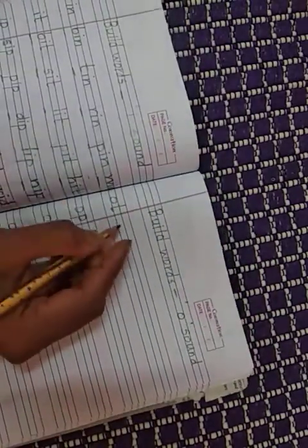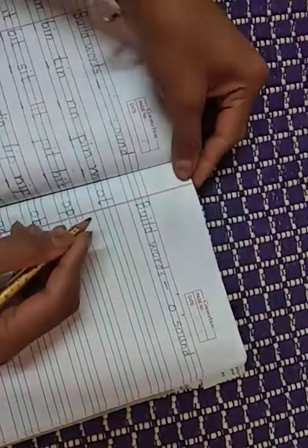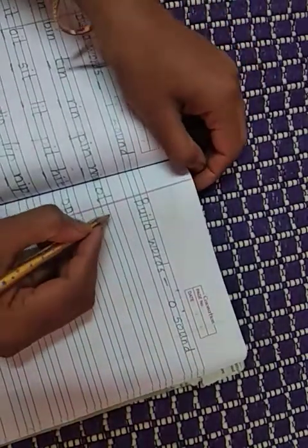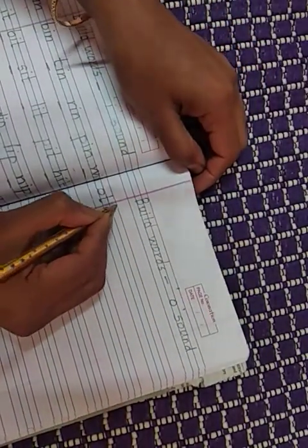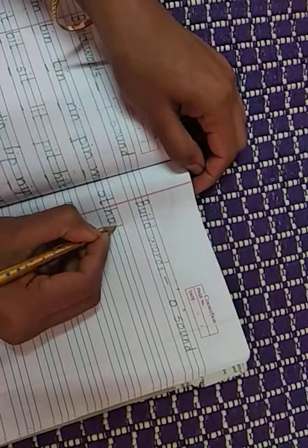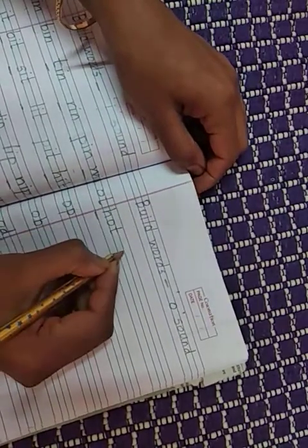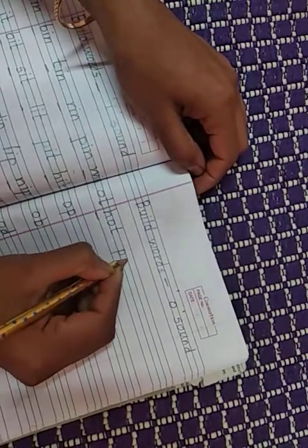Now we will form more and more words. We will try to form more and more words. So, OT words. OT will, what will come? Hot, pot. Right? Hot: H, OT, hot. P, OT, pot.